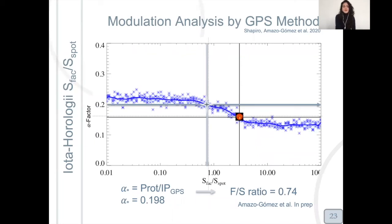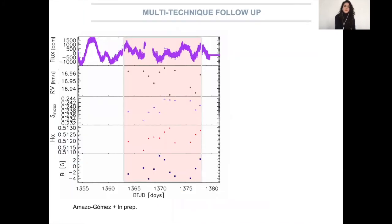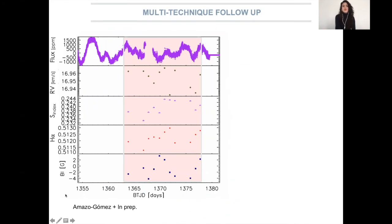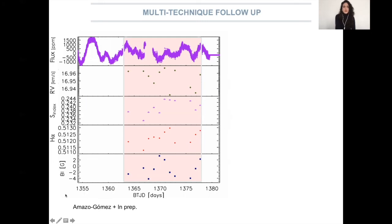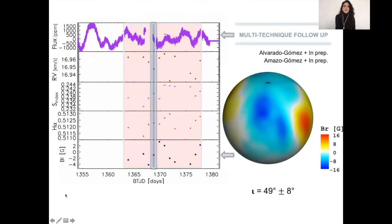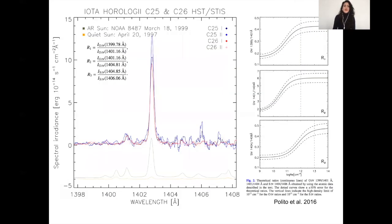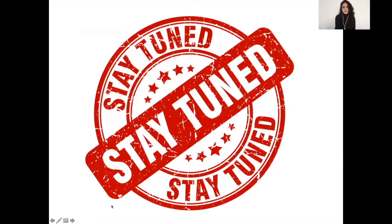We analyzed the facula-to-spot ratio of the star, and this analysis told us that the star is spot-dominated on its surface. We also cross-correlated the multiple observations and were able to recover S index, H-alpha, also radial velocities, and to compare the photometric analysis with the Zeeman-Doppler imaging of the star. With the HST data, we were also able to recover some diagnostics from the transition region in the corona. Stay tuned for our forthcoming publication and stay safe at home. See you.